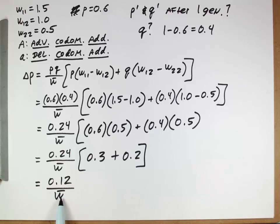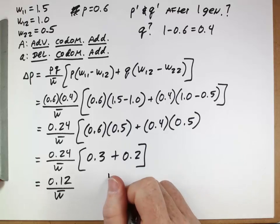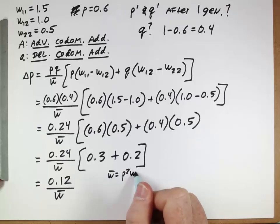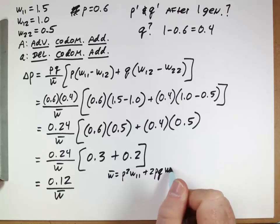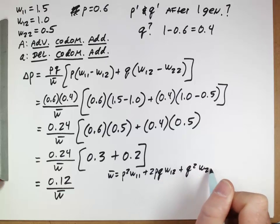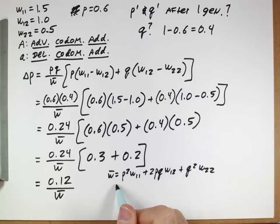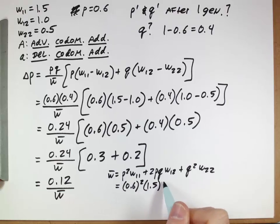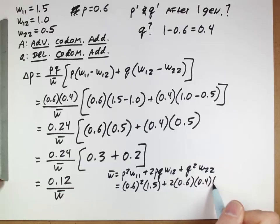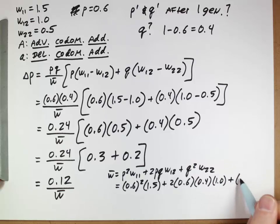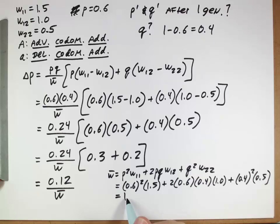So now we need a numerical value for w̄. Remember that's the weighted average of these fitnesses. So w̄ was p squared w11, plus 2pq w12, plus q squared w22. So plugging those in, 0.6 squared times 1.5, plus 2 times 0.6, 0.4 times 1.0, plus 0.4 squared, 0.5. When you work all that through, you get a value of about 1.1.